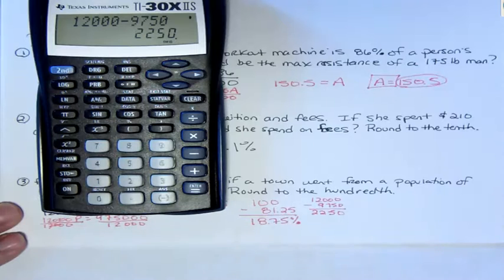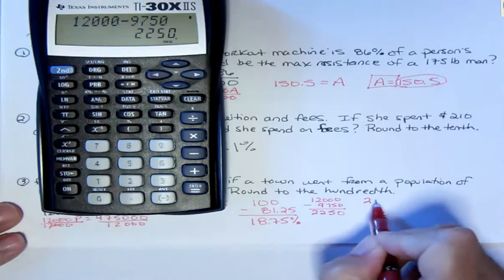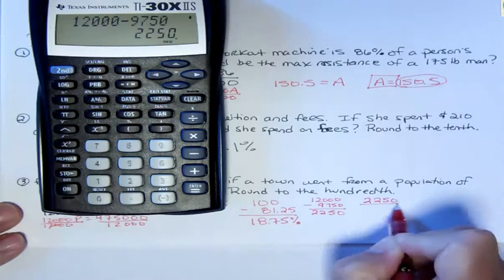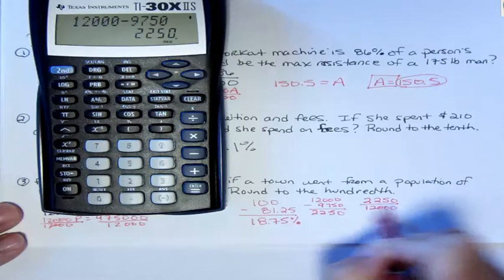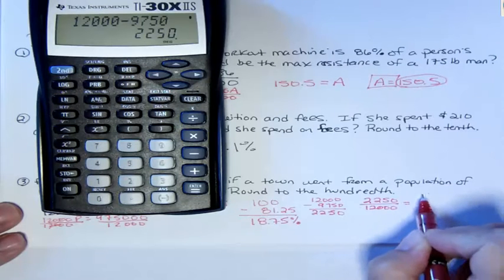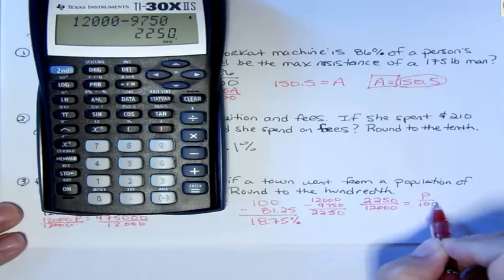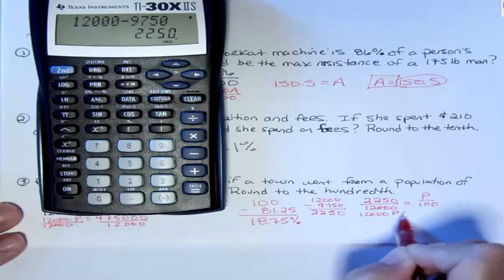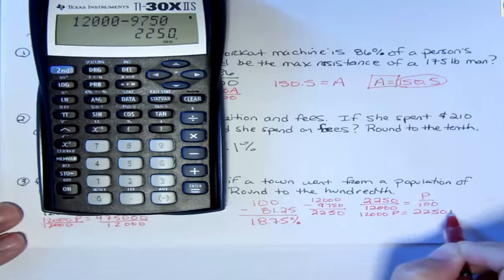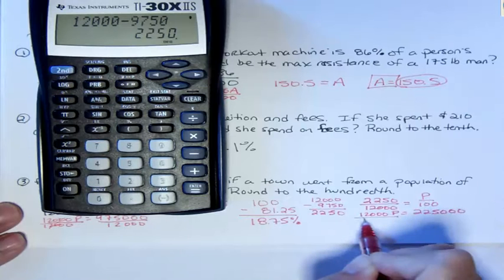So when you work this problem, it would be better to say 2,250 out of 12,000, because these are the people that left. That's your decrease. And then do that, and you're going to get 12,000p equals 225,000, divide by the coefficient.